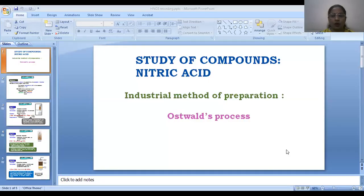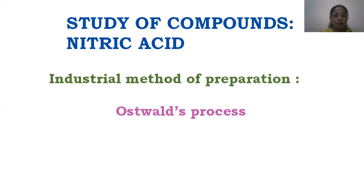Hello students. Today we are going to study 10th standard chemistry. The next chapter after ammonia in the study of compounds is nitric acid. We are going to learn a very important topic from this chapter about the preparation of nitric acid in an industry. The industrial preparation of nitric acid is known by the name Oswald's process, carried out in big industries and factories for the manufacture of nitric acid in large quantities.